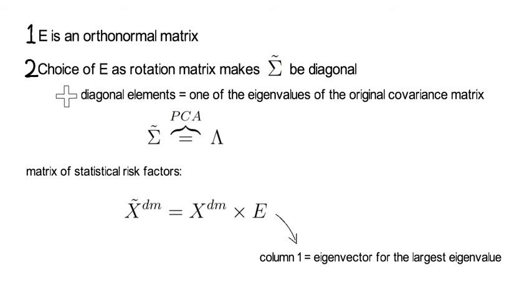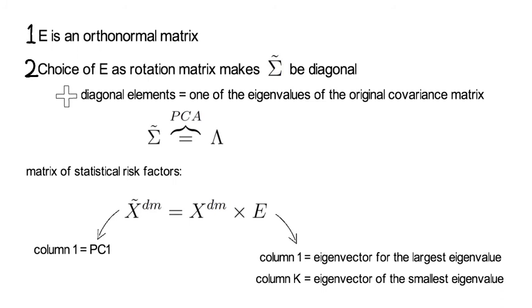Now if E is sorted such that column 1 represents the eigenvector for the largest eigenvalue and column K represents the eigenvector of the smallest eigenvalue, then column 1 of X tilde dm is called PC1, or the first principal component. That is the most important principal component induced risk factor. And column K will be called PCK. That will be the least important principal component, or the kth principal component.